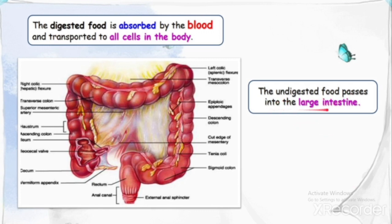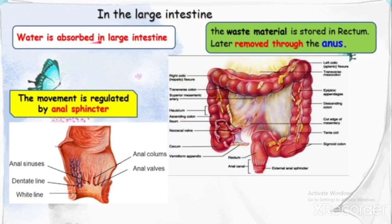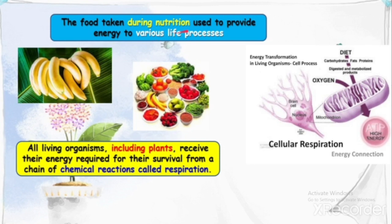Undigested food passes into the large intestine where water is absorbed. The waste material is stored in the rectum and later removed through the anus. The movement is regulated by the anal sphincter.